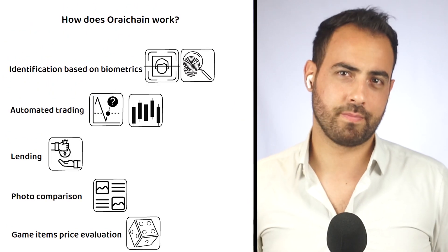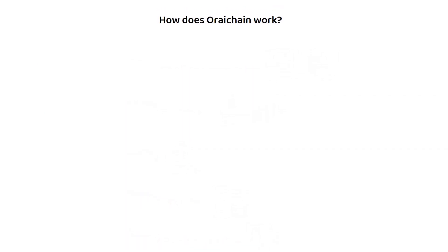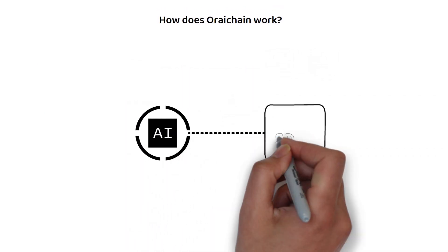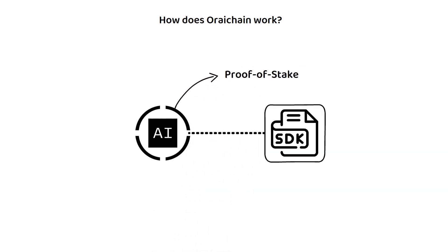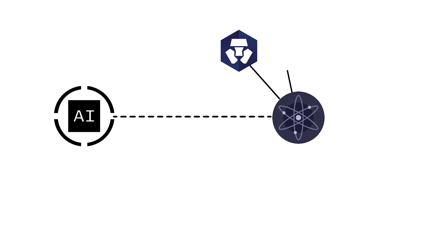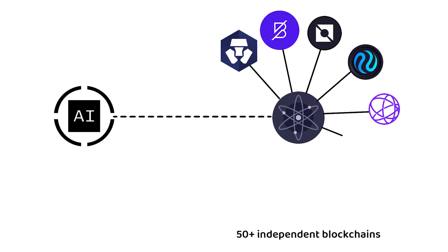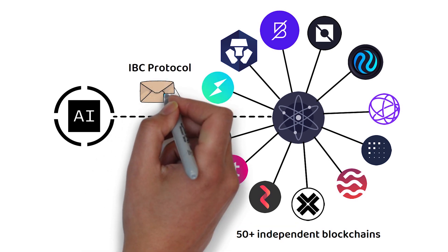But that leads us to the question, how does this all work? Orichain was built using the Cosmos SDK, which means it is a proof-of-stake based cryptocurrency. Like most other Cosmos SDK-based blockchains, Orichain is connected to Cosmos' network of over 50 independent blockchains through their inter-blockchain communication protocol.